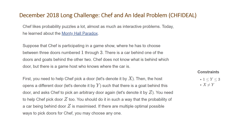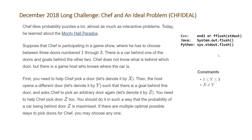If there are multiple optimal possible ways to pick doors for Chef, you may choose any one. The constraints are that Y is going to be between one and three inclusive, and X is not going to be equal to Y. As I mentioned in the first problem I covered from this contest, interactive problems require you to flush your output once you've finished outputting something and want to input something. The three different ways to do this for C++, Java, and Python are in the description, with links to blogs that discuss this further.